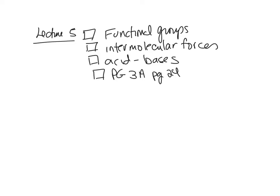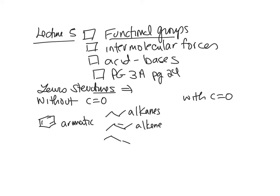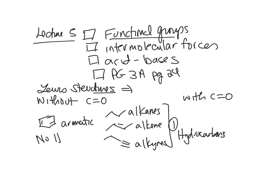We've already talked about functional groups. You need to start learning them because it helps when writing Lewis structures. I recommend downloading a functional group app or making index cards. Compounds are organized into those without a carbonyl and those with a carbonyl. Without carbonyls include aromatics, alkanes, alkenes, and alkynes — the hydrocarbons.